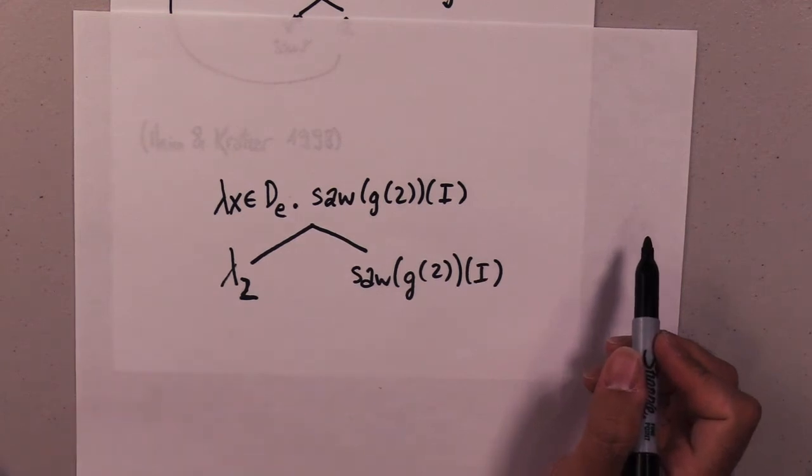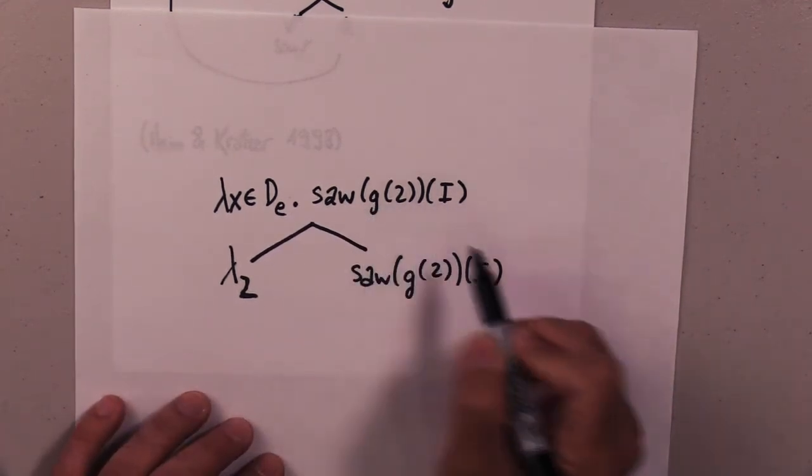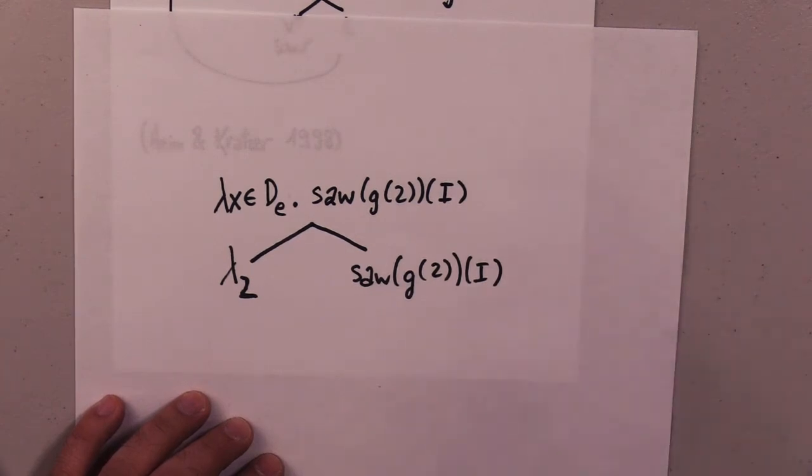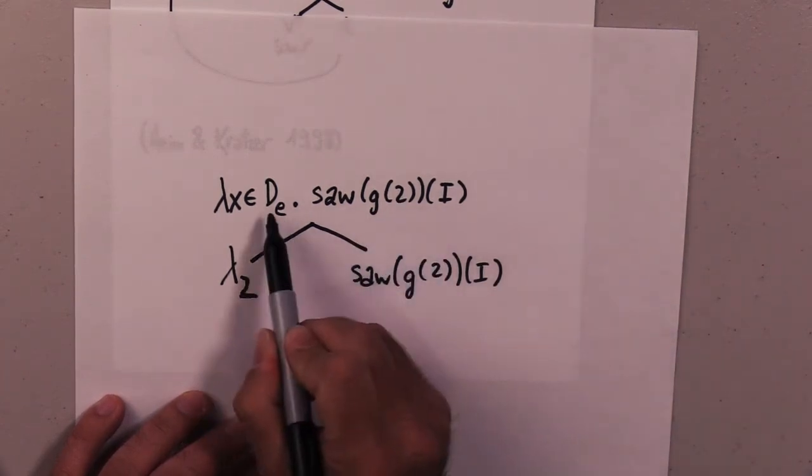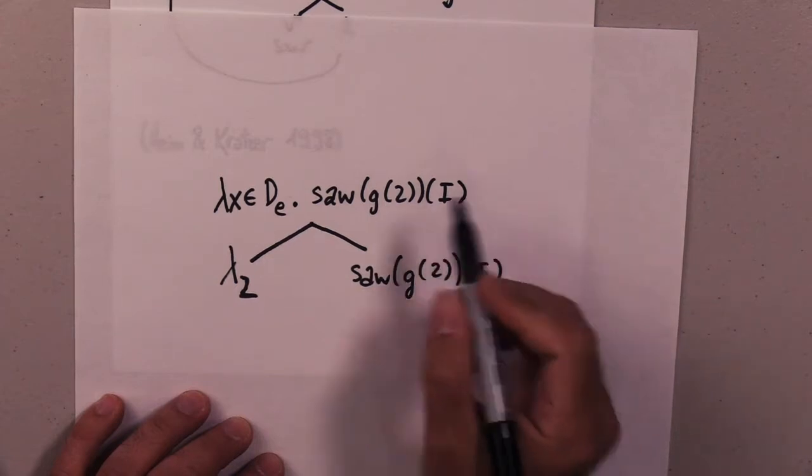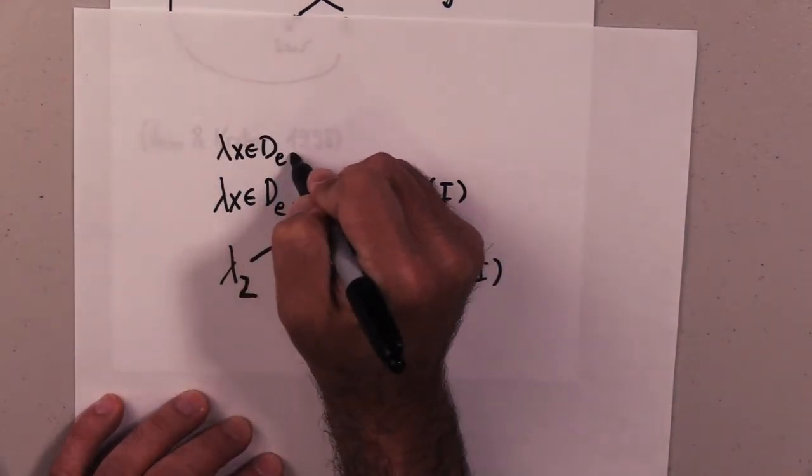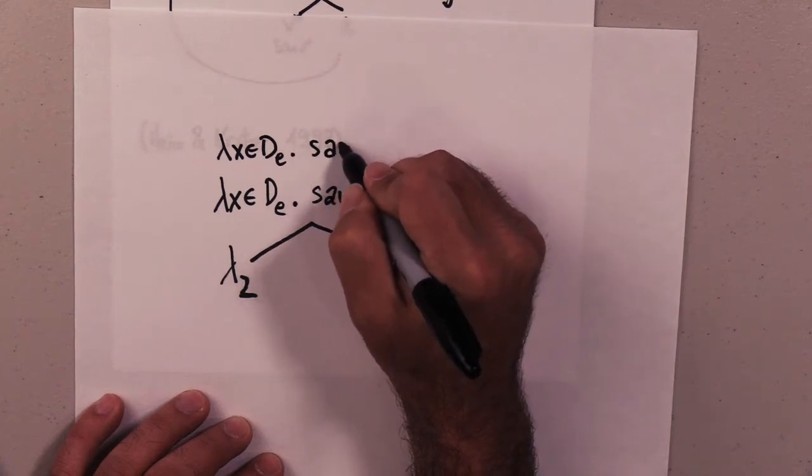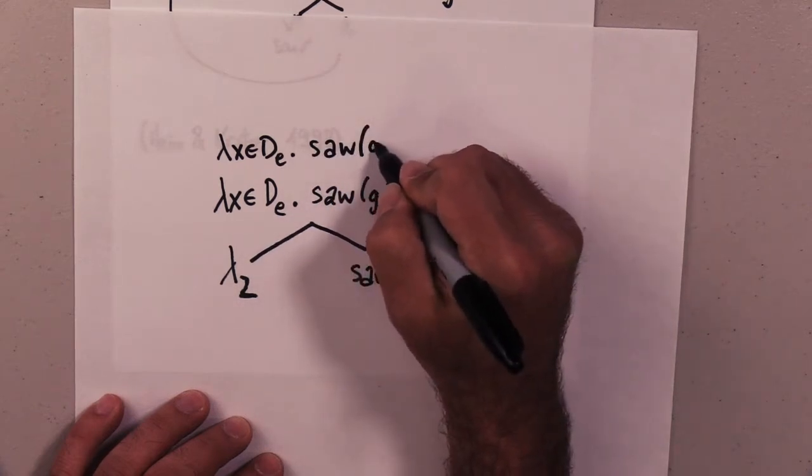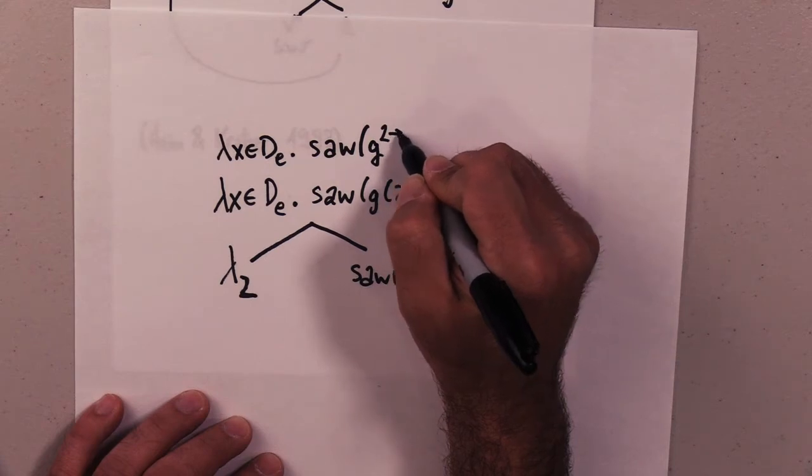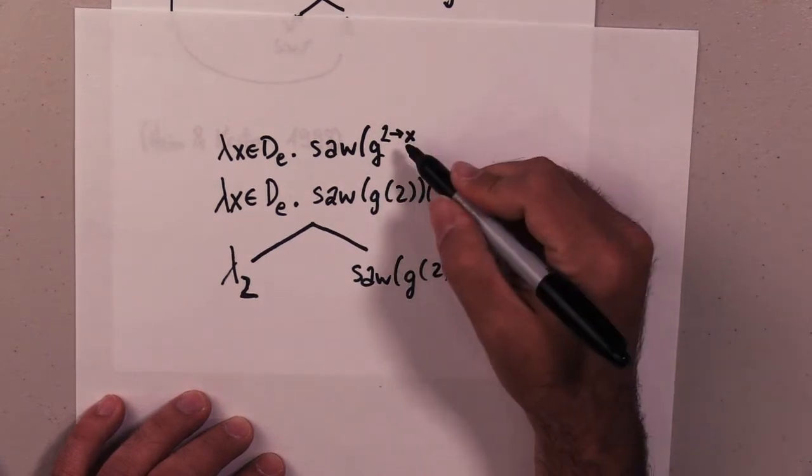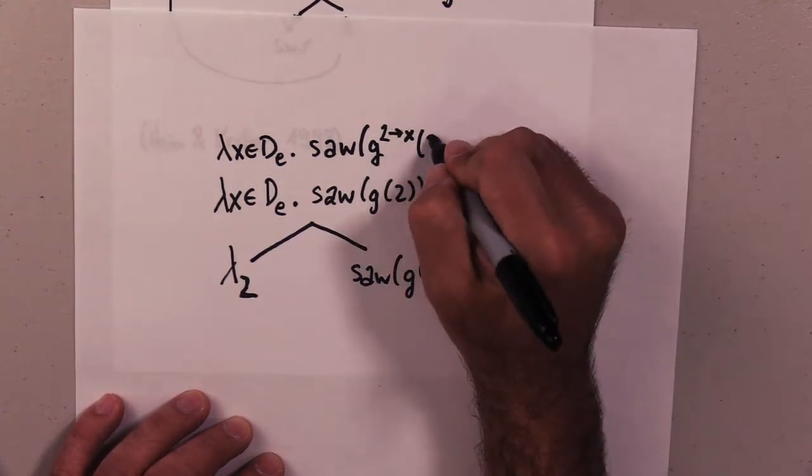The third step is we modify the assignment. That is, instead of G, we're going to have G but modified so that 2 points to our variable here. So we can write this again, and so instead of G we get G so that 2 points to x, 2 maps to x of 2.